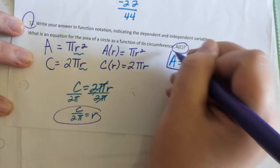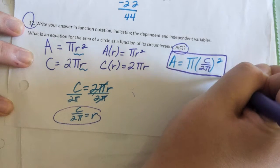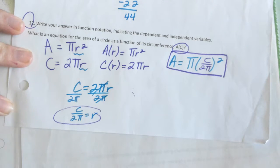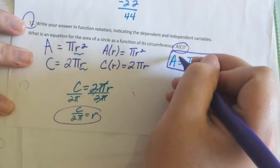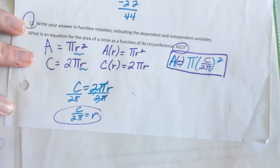Could we simplify this formula further? Absolutely. Are we going to? Nah. Looks good enough as it is. So now we actually have the area in terms of circumference.